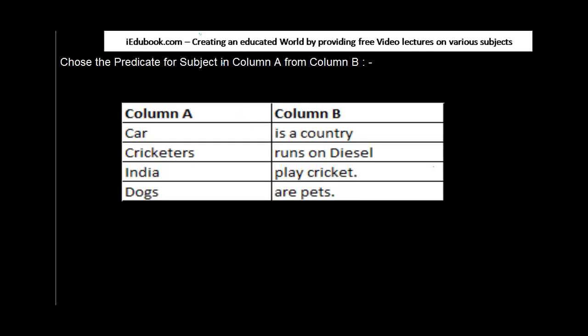Let us now do an exercise on subject and predicate. You are told to choose the predicate for the subject in column A, where column A represents the subject and the predicate is given in column B. We know that the linkage between the predicate and the subject is that the predicate basically talks about the subject, so to connect column A to column B it has to be something related.